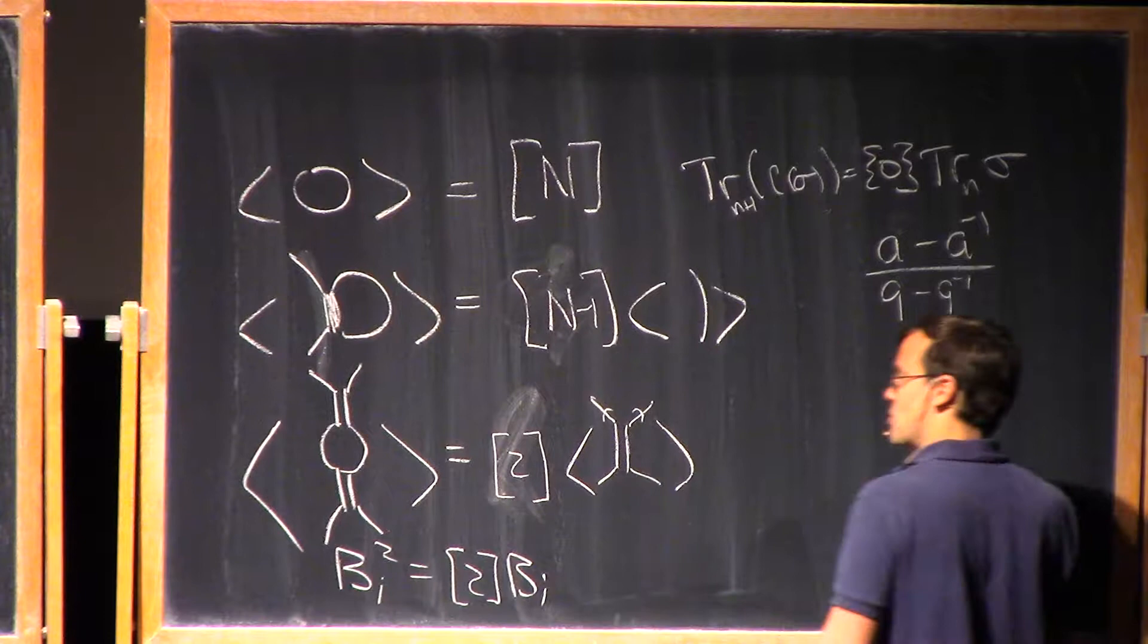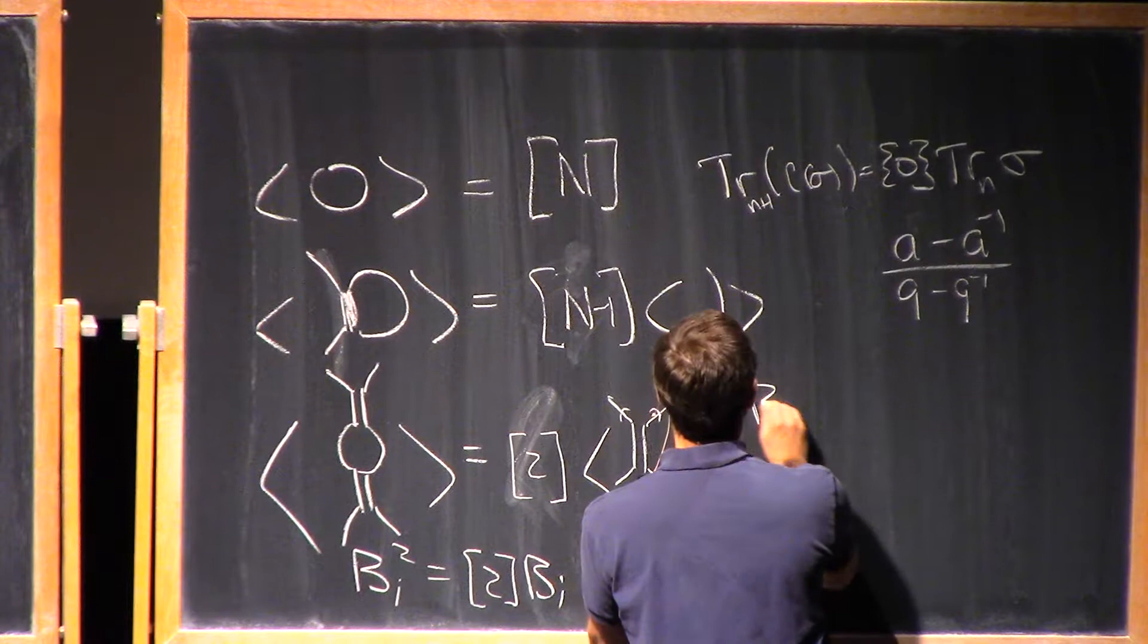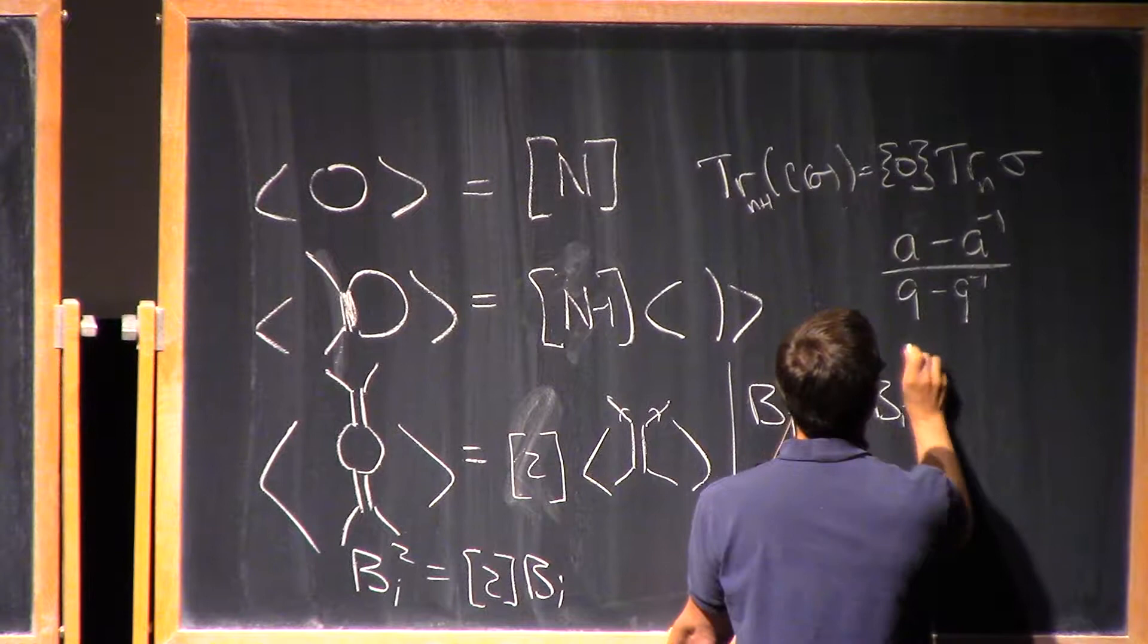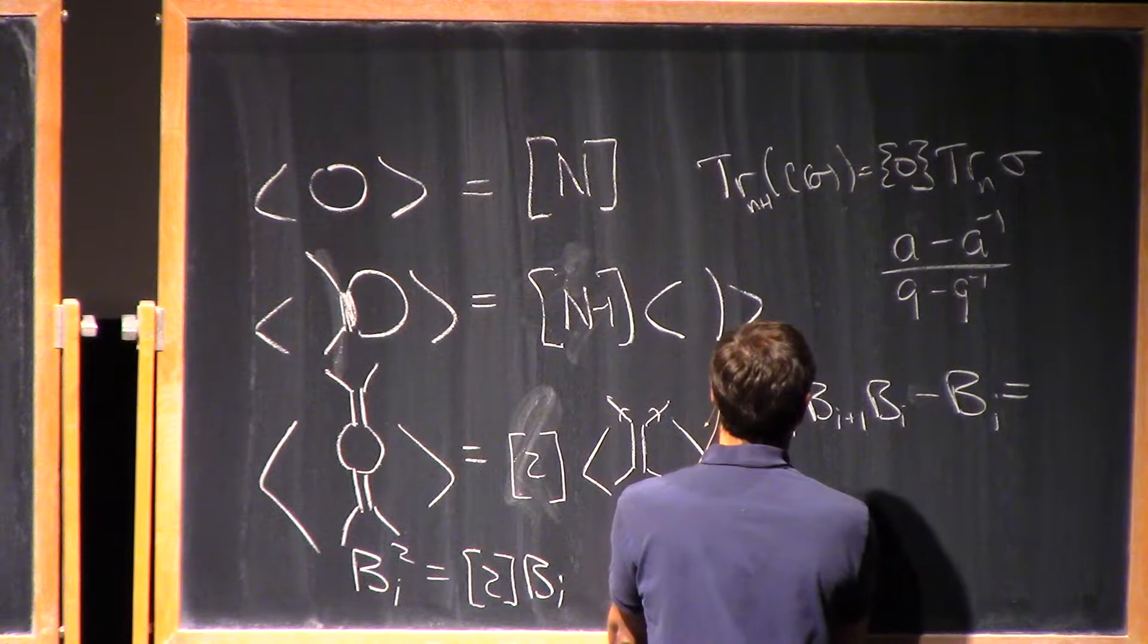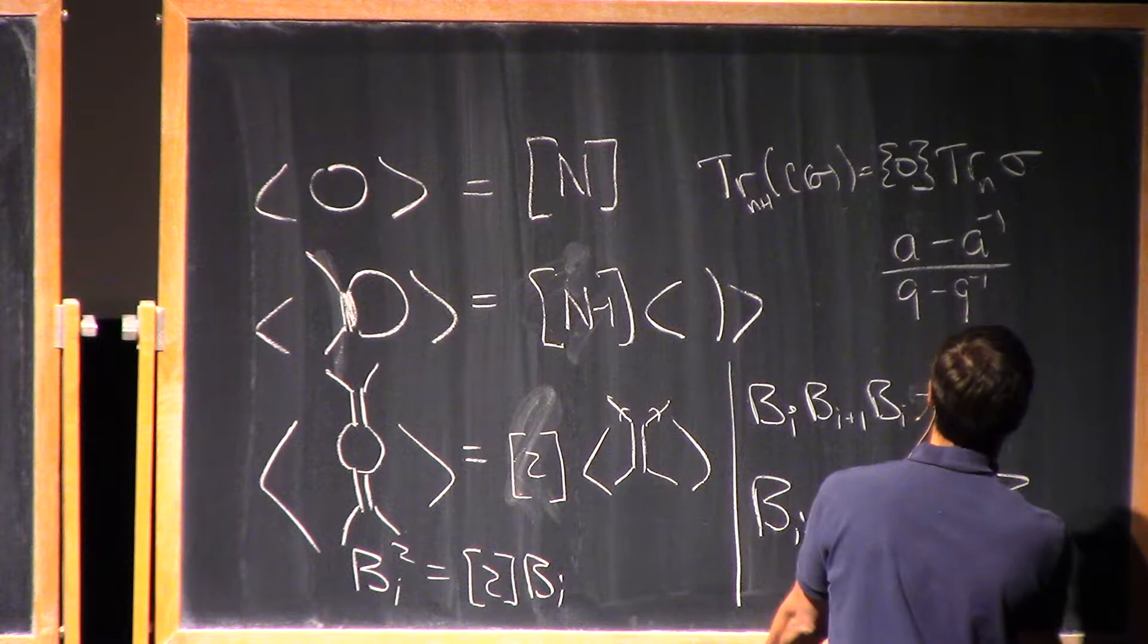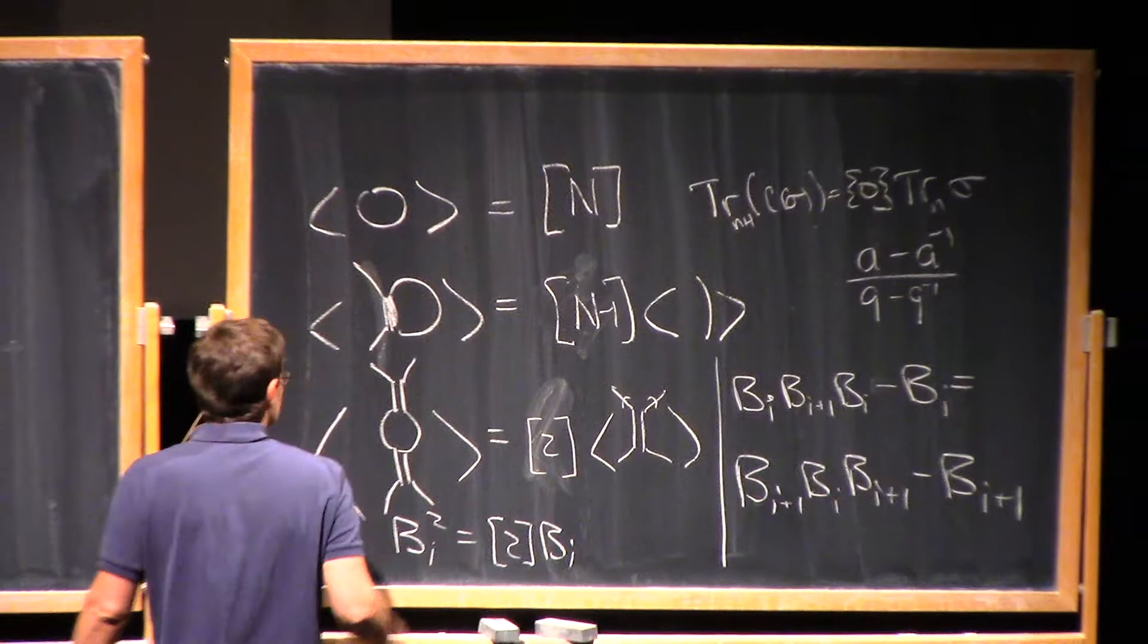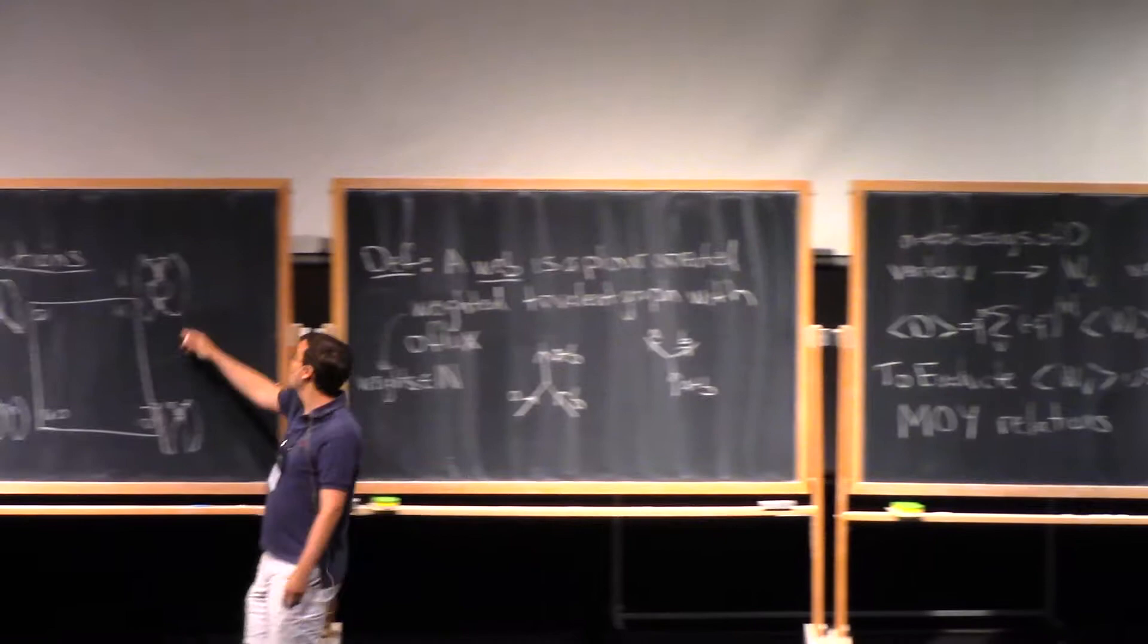That doesn't come from the trace, that's a relation in the Hecke algebra. That's the relation that Bi squared is quantum two times Bi. Now there's one more diagrammatic relation that I won't draw the diagram for, but it just corresponds to the relation that Bi Bi plus one Bi minus Bi is equal to Bi plus one Bi Bi plus one minus Bi plus one, which is the other interesting relation in the Hecke algebra.